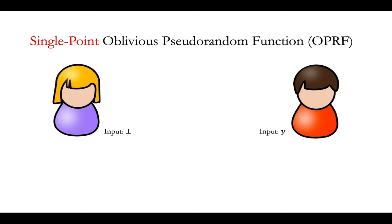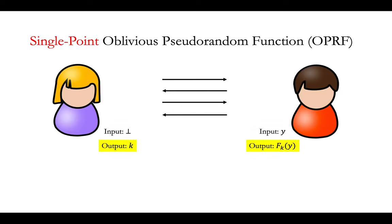First, what is single-point OPRF? It is short for single-point oblivious pseudorandom function, which is a special case of a secure two-party computation protocol between Alice and Bob, where Alice has no input and Bob has a single input Y. From the secure two-party computation protocol, Alice will learn a PRF key K, and Bob will learn the PRF evaluated on his input Y. This is the functionality of single-point OPRF.